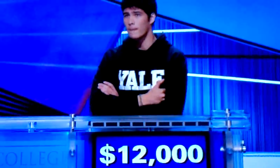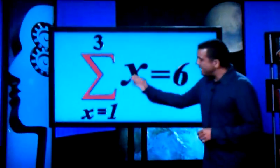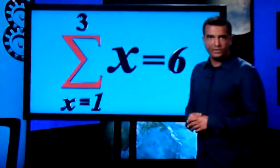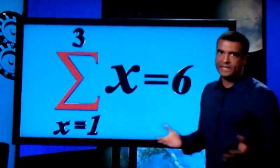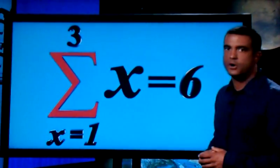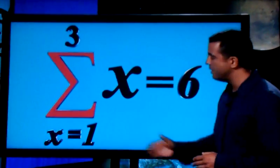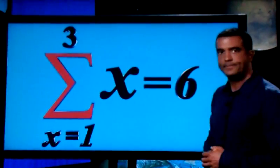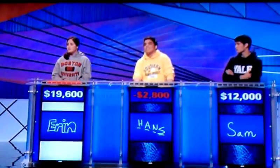Math for $400. Here's Jimmy. The big E is actually the Greek letter sigma. In math, it means to do this to a series of terms — here, from one to three. Aaron? What is sum them? Sum them or add them. You were right.